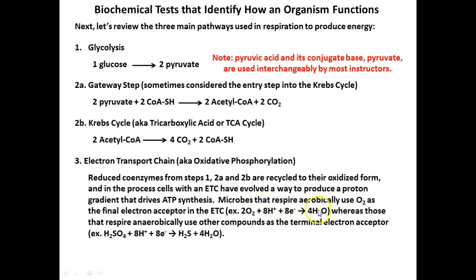For microbes that respire aerobically, oxygen is the final electron acceptor. Those electrons that go to the electron transport chain are accepted by oxygen and metabolic water forms in that process. For organisms that respire anaerobically but do use an electron transport chain, they're giving those electrons to some other molecule. For example, hydrogen sulfate made into hydrogen sulfide — it's accepting electrons, and water is also formed.